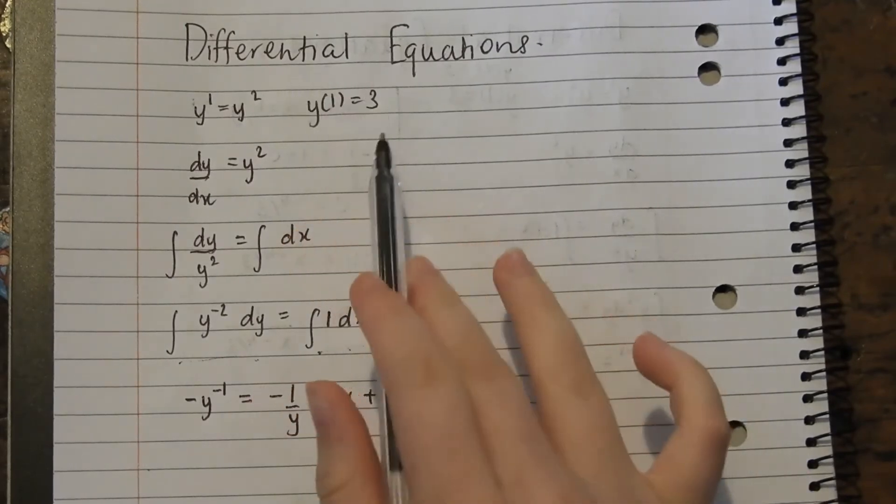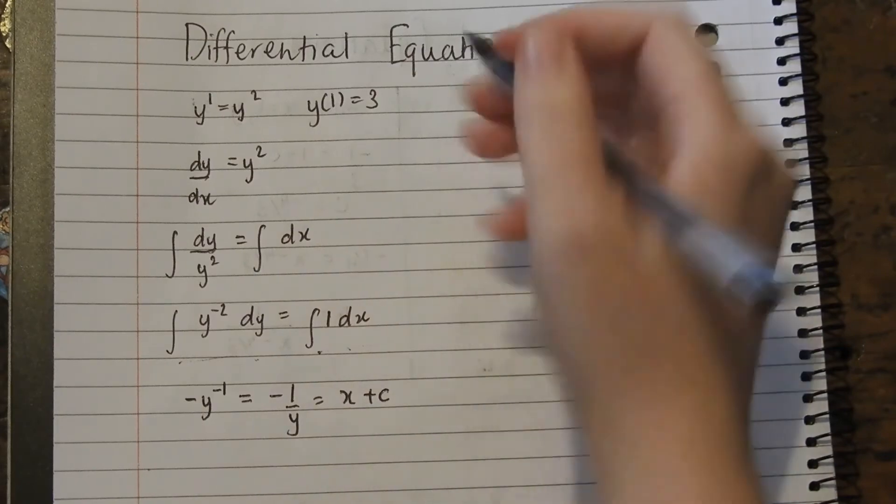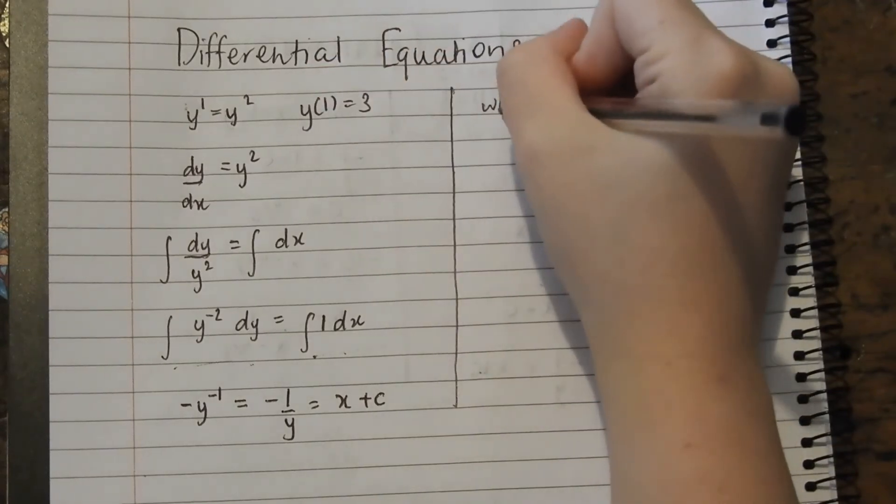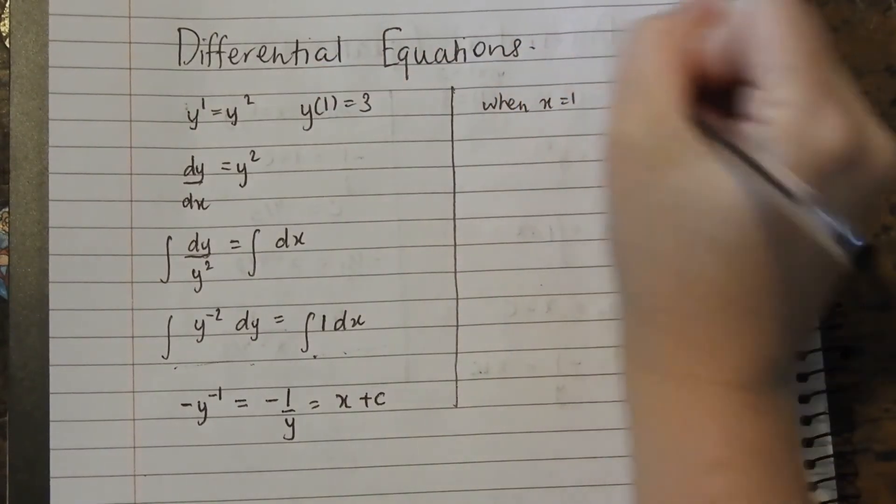Now since it's got initial conditions, we need to find this c value on this side. So this means when x equals 1, y equals 3.